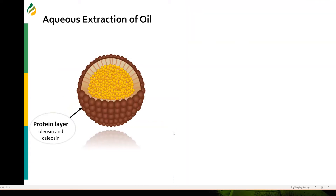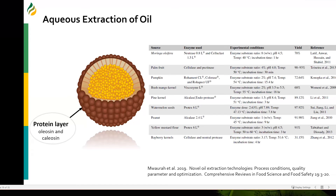Another way to improve oil recovery is to add enzymes. These lipids are typically protected by a protein layer like oleosin or calosin. You can add proteases to disrupt those protein layers, or even cellulases to break down cell wall structure and further improve oil recovery. Here are all the different enzymes that have been tried with different botanical sources for lipids.